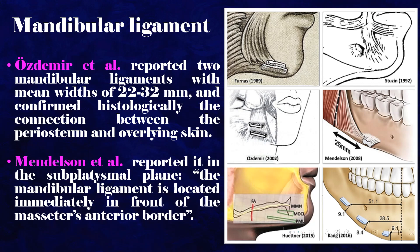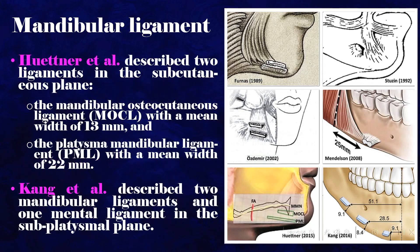Mendelsohn et al. reported it in the subplatysmal plane; the mandibular ligament is located immediately in front of the masseter's anterior border. Houtner et al. described two ligaments in the subcutaneous plane: the mandibular osteocutaneous ligament (MOCL) with a mean width of 13 mm, and the platysma mandibular ligament (PML) with a mean width of 22 mm.